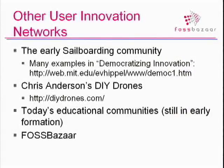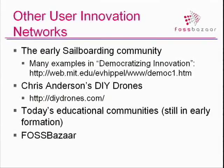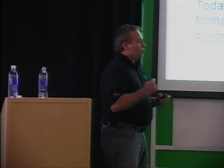While free and open source software is one of the first best examples of a user innovation network, there are actually many more that are still in their infancy. One example is the early sailboarding community — one of the first examples in Eric Von Hippel's book. People were trying different ways of lacing their feet to the board, different sail sizes, getting impaled and slammed into the water when things didn't go right in those early prototypes. They kept working and building, and some of those early adopters eventually went into business making boards, innovating with their community, and brought sailboarding to the masses.